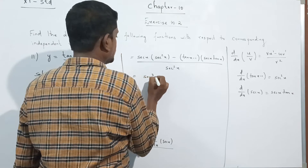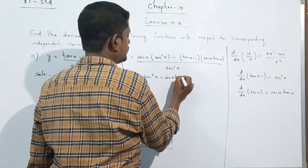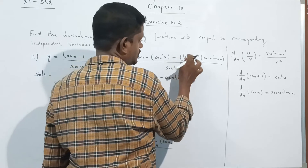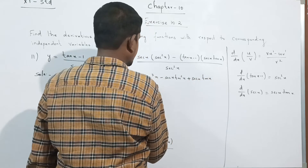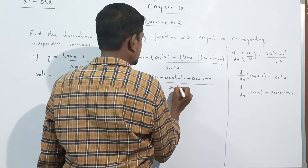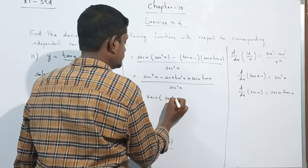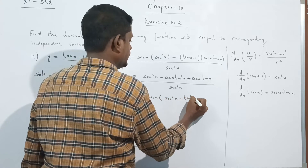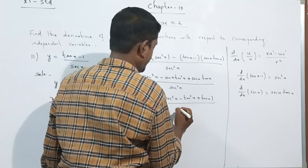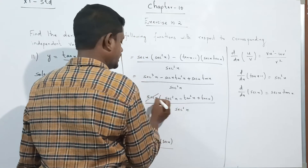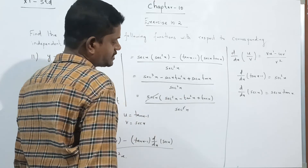Expanding: sec²x minus tan x times (tan x minus 1), then collecting terms. Taking sec x as a common factor: we get sec²x minus tan²x plus tan x, all divided by sec²x. One sec x cancels out.